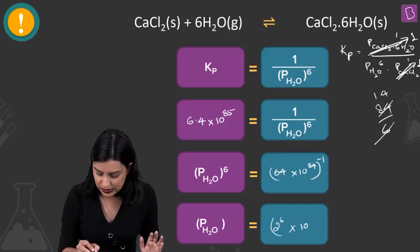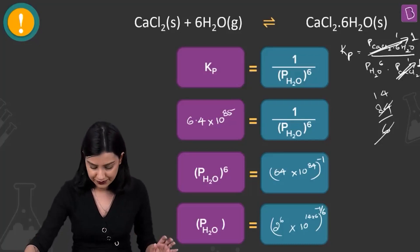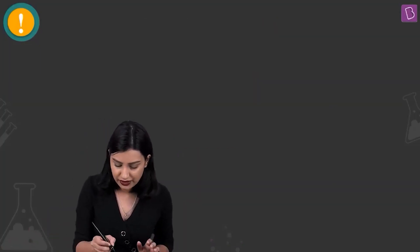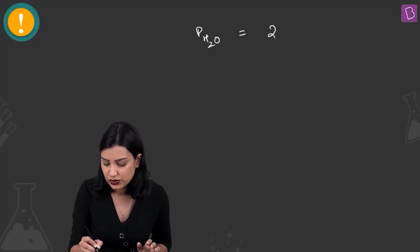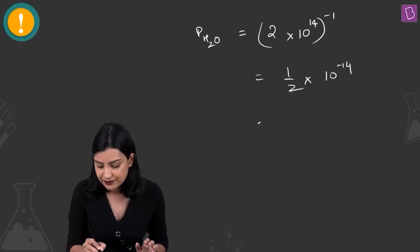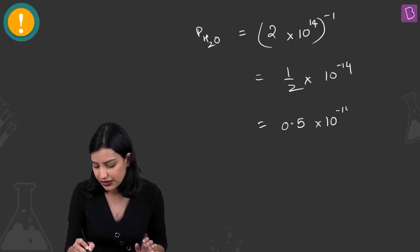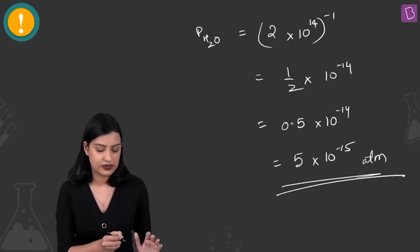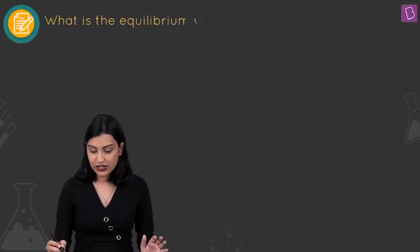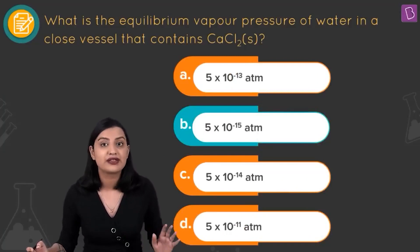So P(H₂O) = (2×10¹⁴)⁻¹ = 0.5×10⁻¹⁴ atm = 5×10⁻¹⁵ atm. Looking at the options, this matches option B — 5×10⁻¹⁵ atm is the right answer.